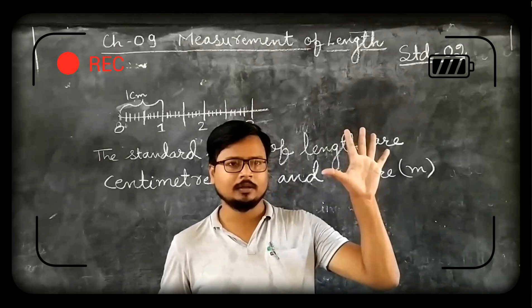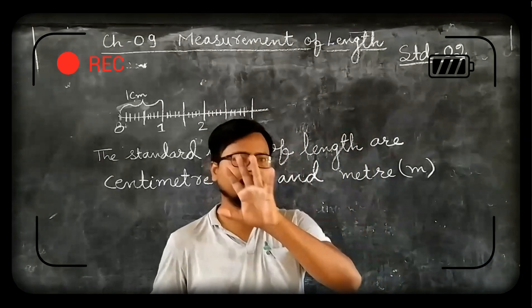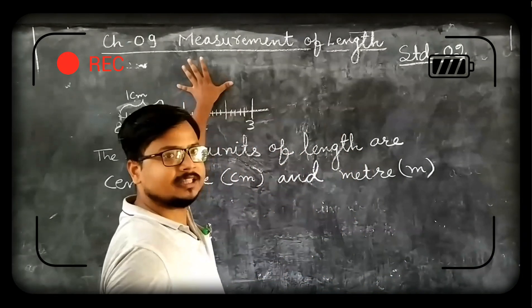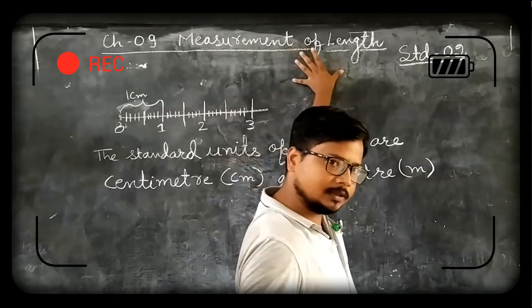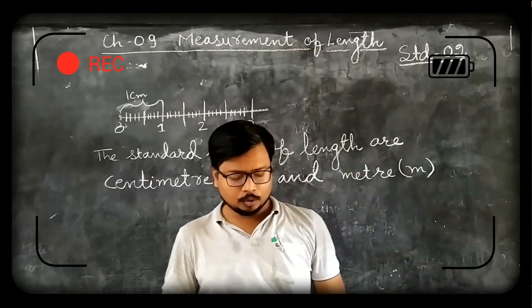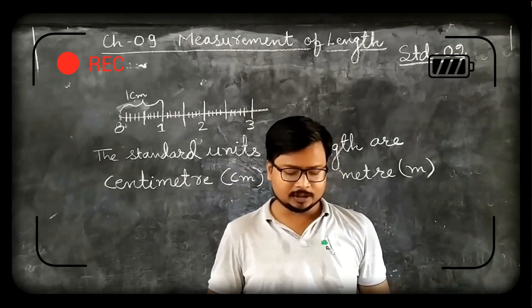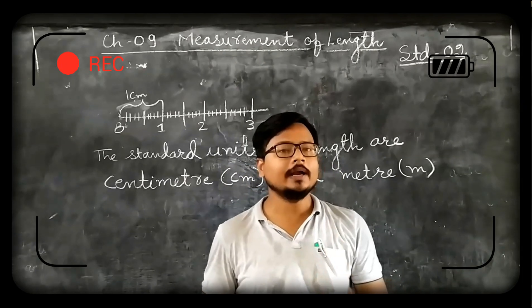Hand span means this one: 1, 2 like this. 1 hand span, then 2 hand span, then 3 hand span. So Rahul is 14 hand span tall. What is the height of Rahul? Rahul is 14 hand span tall.